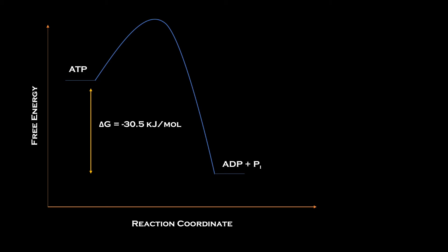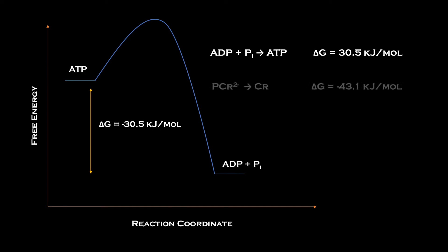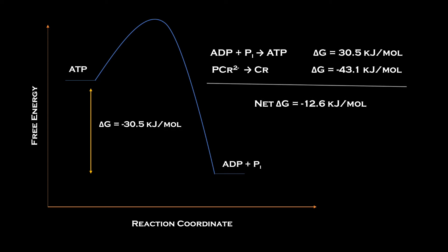The unfavorable addition of a phosphate onto ADP requires an input of 30.5 kilojoules per mole, which is paid for by the release of 43.1 kilojoules per mole when the high-energy phosphocreatine is hydrolyzed. This yields a net release of 12.6 kilojoules per mole. Therefore, this quick reaction allows for the formation of ATP or ADP depending on the location of CK.